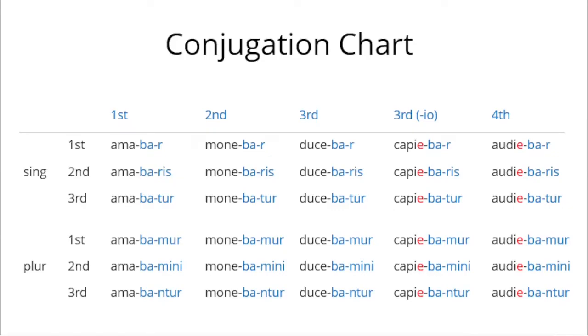Please remember the IO verbs of the third conjugation and the fourth conjugation add the letters I, Capjebar and Audijebar. Please learn the imperfect passive forms for all Latin conjugations. Stop the video, then go on.